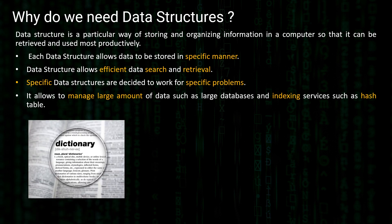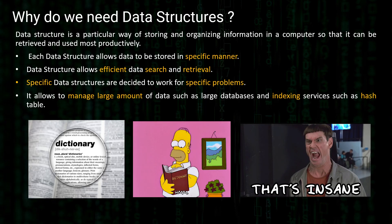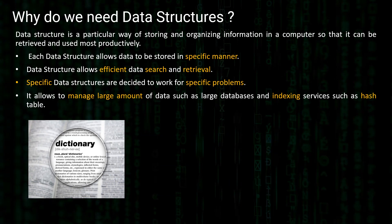Let's take a real world example — a dictionary. There are thousands of words in an actual dictionary. If I ask you to search for the word 'snippets,' just by looking at the word you know it starts with 'S' and then 'SN,' so you'd directly jump to that page in the dictionary and search from there. This is possible because words are arranged in A-to-Z order. Now imagine if the words were not arranged in order — you'd start from the first page and search till you find 'snippets.' That could take an hour. Because it's organized in a particular way, you find it easily — and data structures simulate that exact scenario in the digital world.